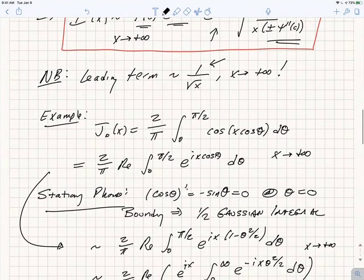We can use that for one of the most common functions in mathematical physics, the Bessel function of order 0. Here's an integral expression for J₀(x): (2/π)∫₀^(π/2) cos(x cos θ)dθ, and we're interested in what happens as x goes to plus infinity.